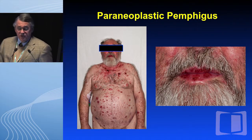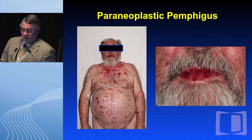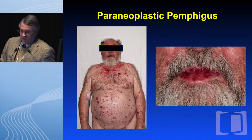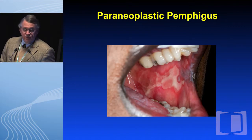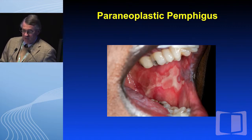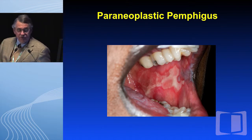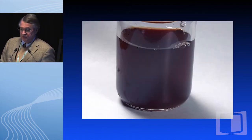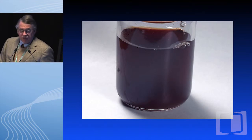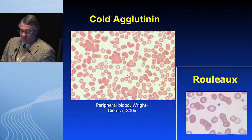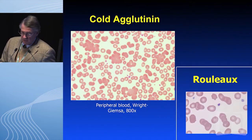Paraneoplastic pemphigus — a terrible disease, very uncomfortable. You can see the lips and the mouth. Some of the most uncomfortable patients you ever want to see; it's probably even worse than graft-versus-host disease. This is dark urine, cold agglutinin disease, and underlying CLL.